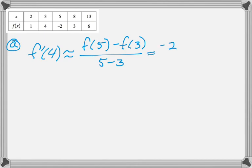Pull the values from the table, so f of 5 is negative 2, f of 3 is 4, and then divide by 2, and we get negative 3. There are no units or anything, so that's our answer.